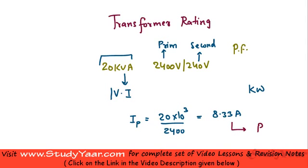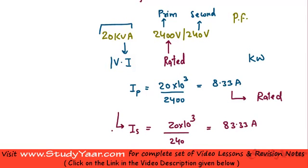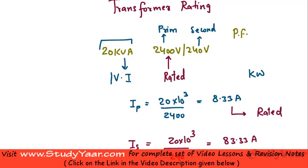Just like these quantities are known as your rated voltages, you can find out the maximum allowed current. Similarly, the maximum allowed current in your secondary would be 20 × 10³ divided by 240, which is going to be around 83.33 amperes. That's the rated current allowed to flow through your secondary. If you use any value higher than this, you are basically reducing the life of your transformer. These are the maximum safe values that you can use.